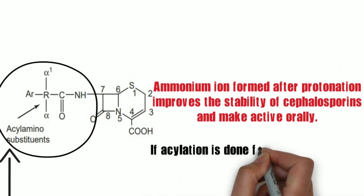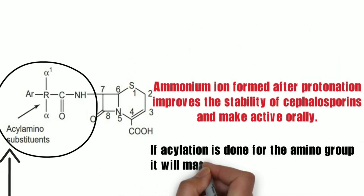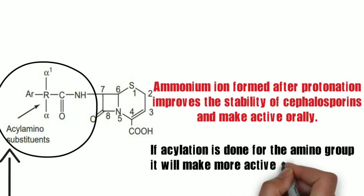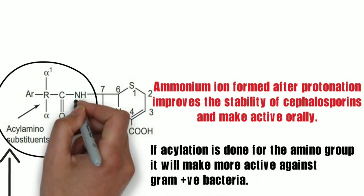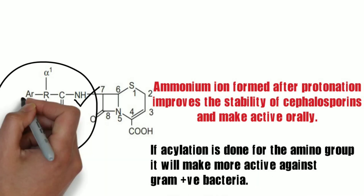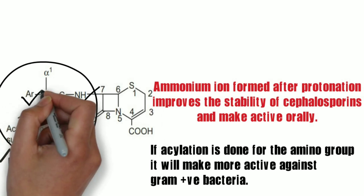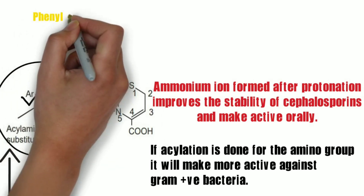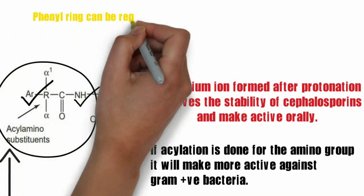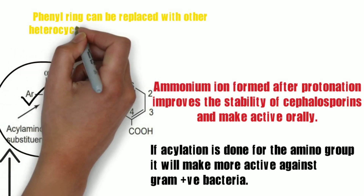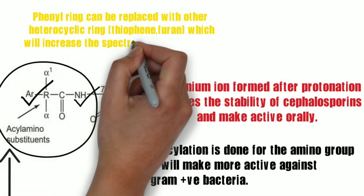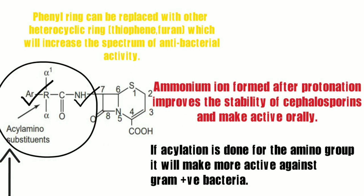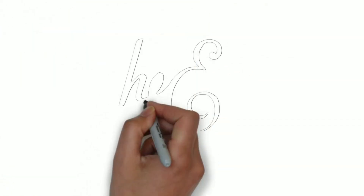If we do acylation of the amino group in the side chain, it will produce a compound that is more active against gram-positive bacteria. If we look at the aryl group in the side chain, the phenyl group can be replaced with a heterocyclic ring such as thiophene or furan, which will increase the spectrum of antibacterial activity. This is all about the SAR of cephalosporins.